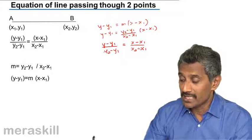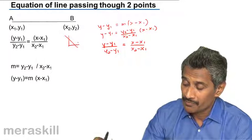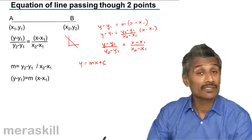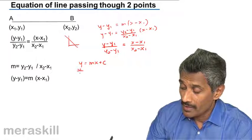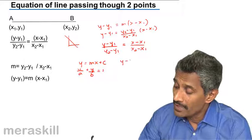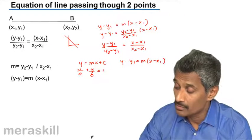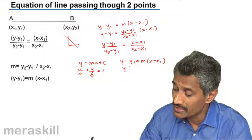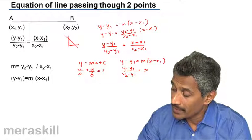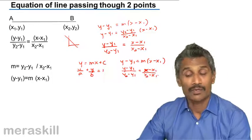So if you see the various types of equations of lines, all of these types are y is equal to mx plus c which is the slope-intercept form, x upon a plus y upon b is equal to 1 is the two-intercept form, y minus y1 is m into x minus x1 is the point slope form. The same one on rearranging will give y minus y1 upon y2 minus y1 is equal to x minus x1 upon x2 minus x1.